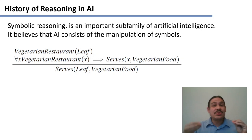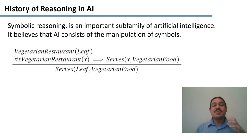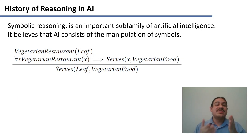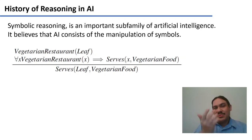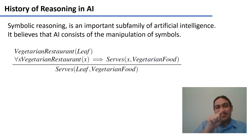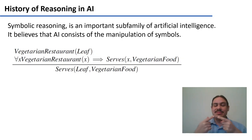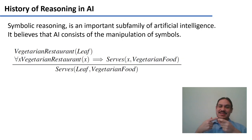Deep learning is very effective but very difficult to interpret. There's another family of artificial intelligence called symbolic reasoning, which believes that AI would essentially be the manipulation of symbols to generate new knowledge. For example, we saw this in the last video: if we know that Leaf is a vegetarian restaurant, we can turn the symbol 'Leaf' into X and then infer new knowledge about Leaf, such that it serves vegetarian food.